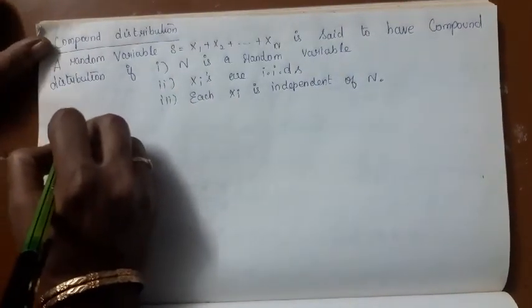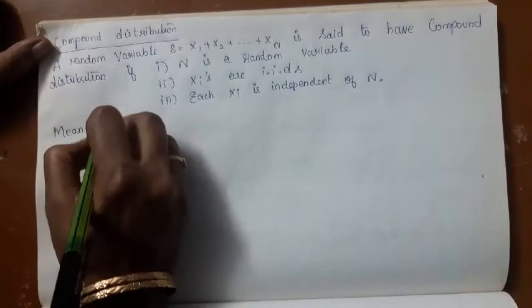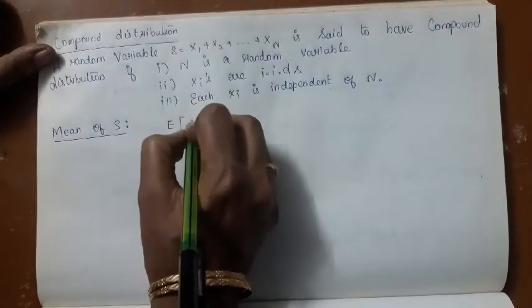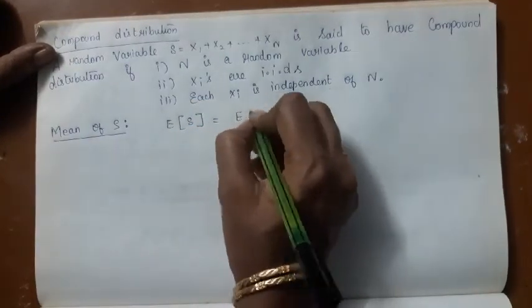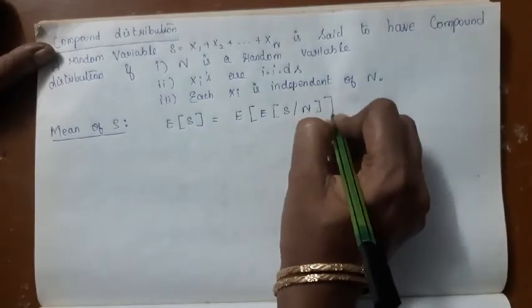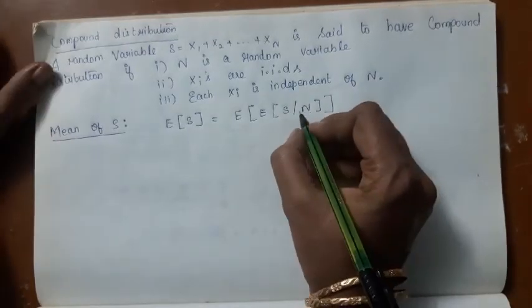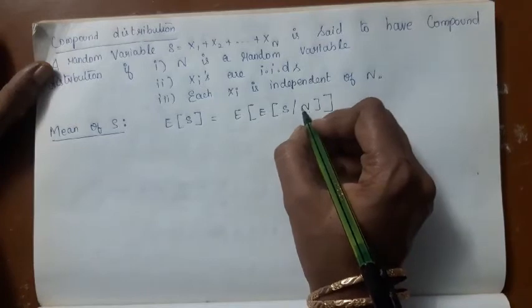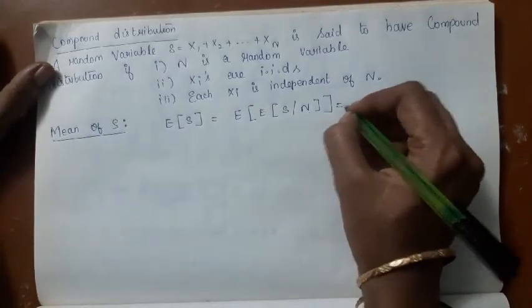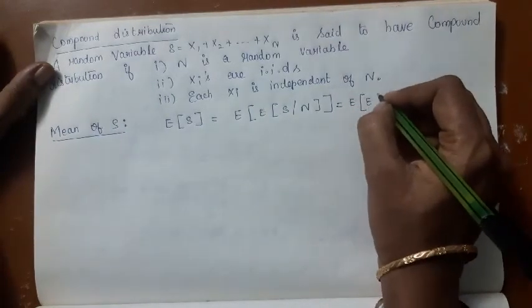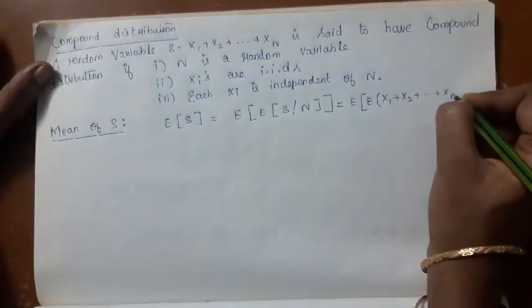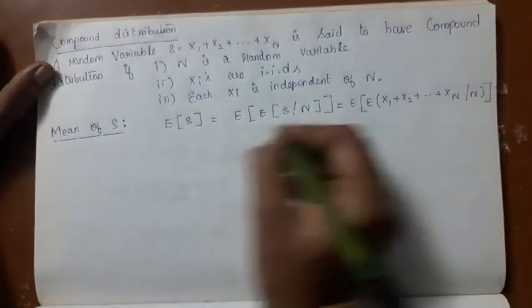Let us now derive the mean of this distribution — the expectation of S. You know that E[S] can be written as expectation of E[S|N], conditioning on the values of N and then taking expectation again. So this can be written as expectation of E[X1 + X2 + ... + XN | N], where you know the value of N.